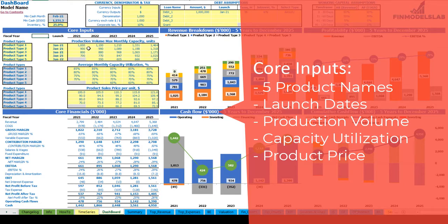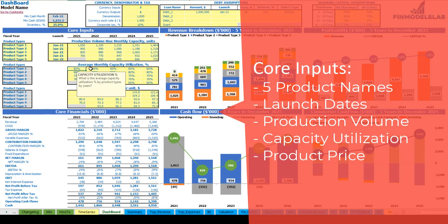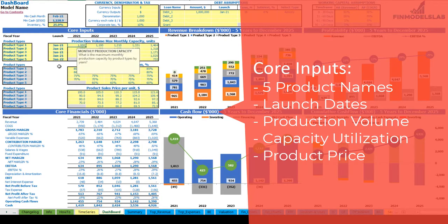The next step is to set up your production volume — maximum monthly capacity in units. This means that in 2021 for product type one you can produce a maximum of 1,000 units per month. Obviously you will not produce the maximum monthly capacity, so there is a monthly capacity utilization percentage. This is by product types and by years. For example, if you put 80% it means that for 2021 on average you'll produce 800 units per month instead of the maximum 1,000 units.